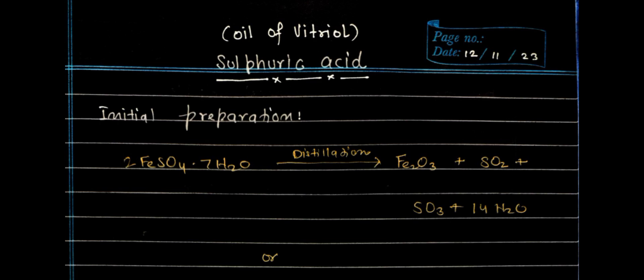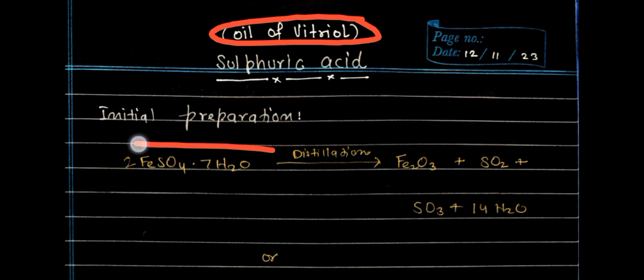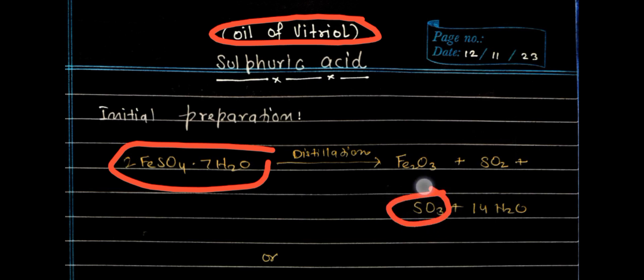Today we are going to study sulfuric acid, also known as the oil of vitriol. Initially it was prepared from green vitriol. By distillation of green vitriol, we get a mixture of SO₃ and H₂O, and when we combine sulfur trioxide with water, we get sulfuric acid.